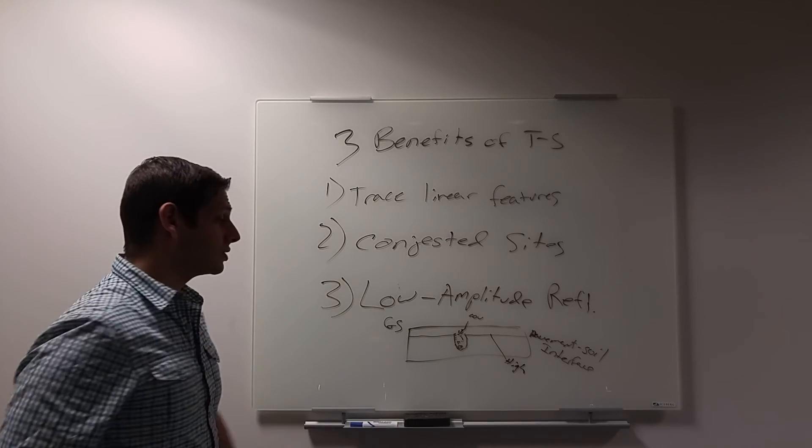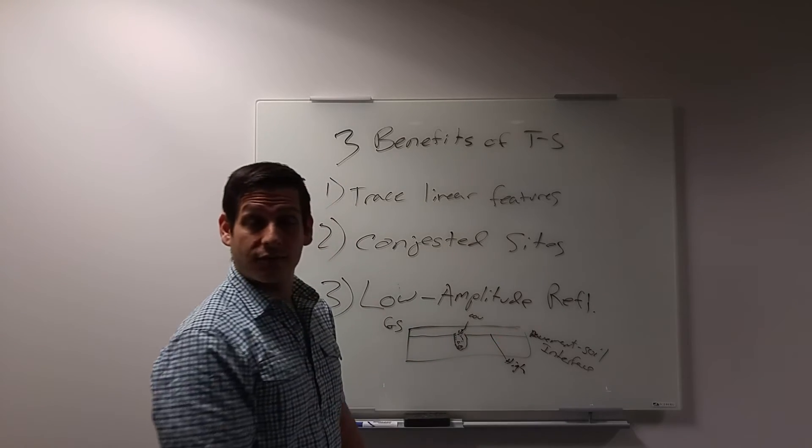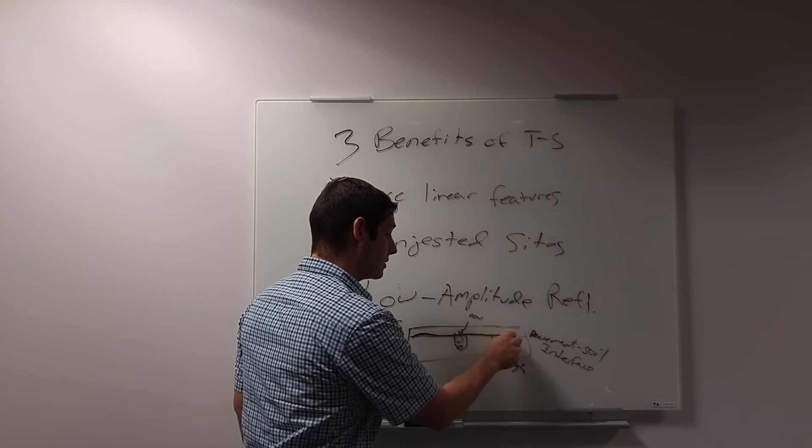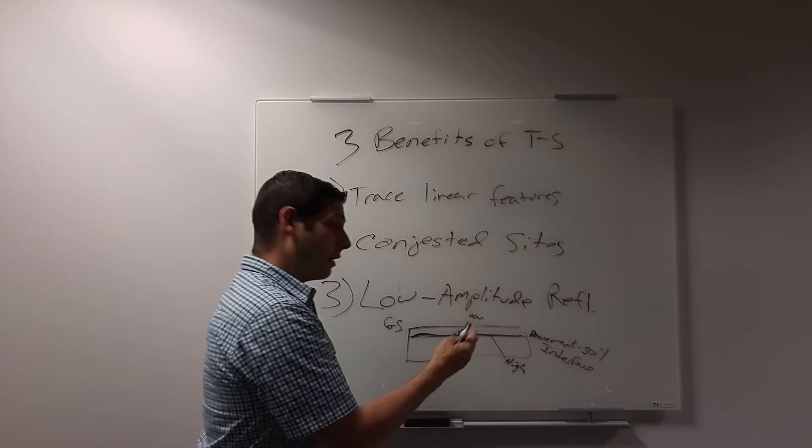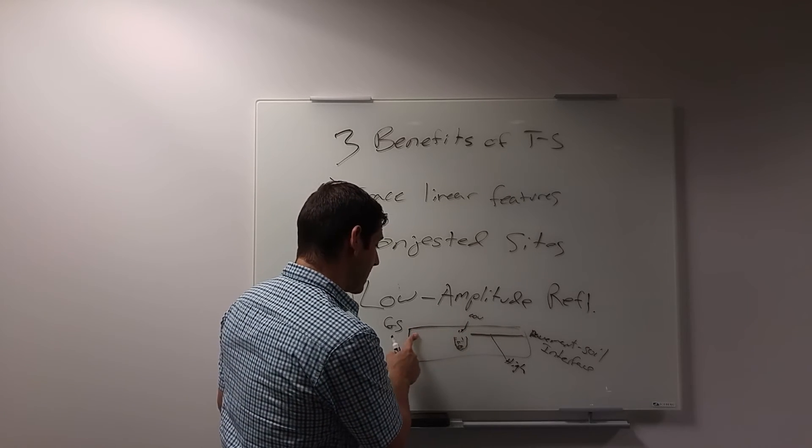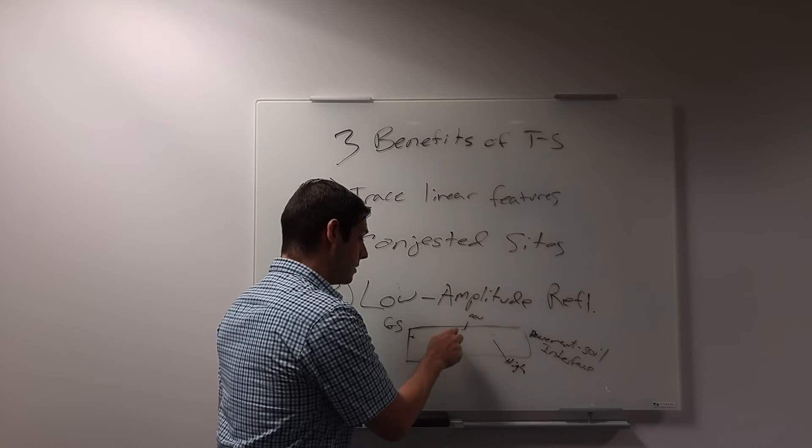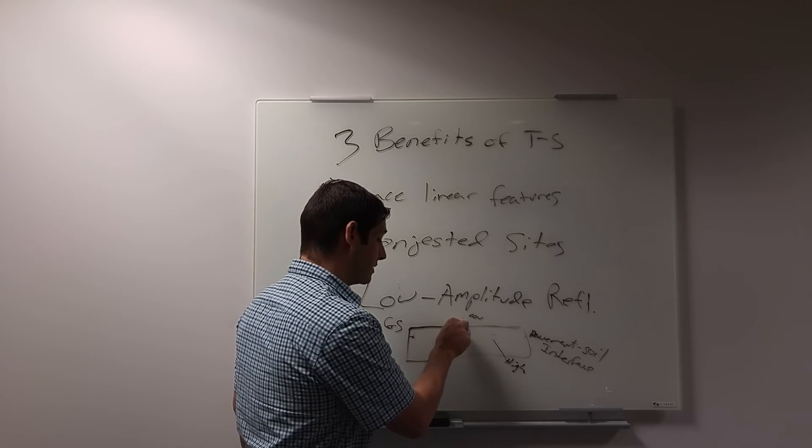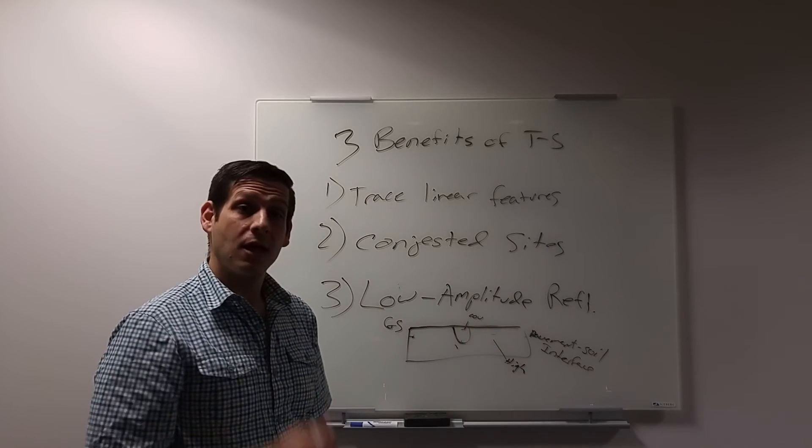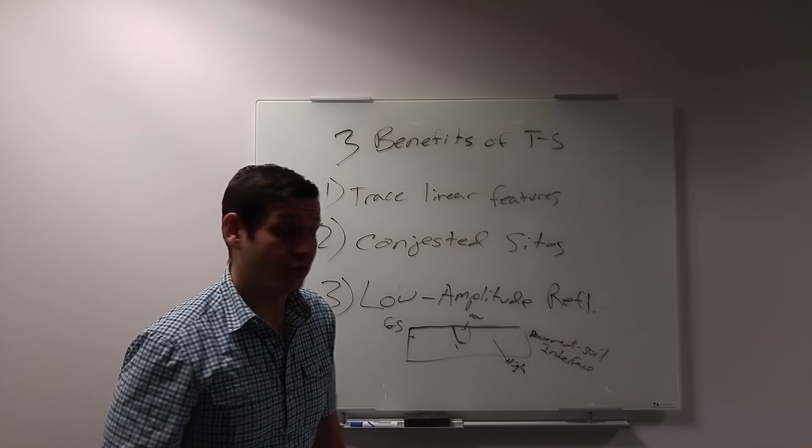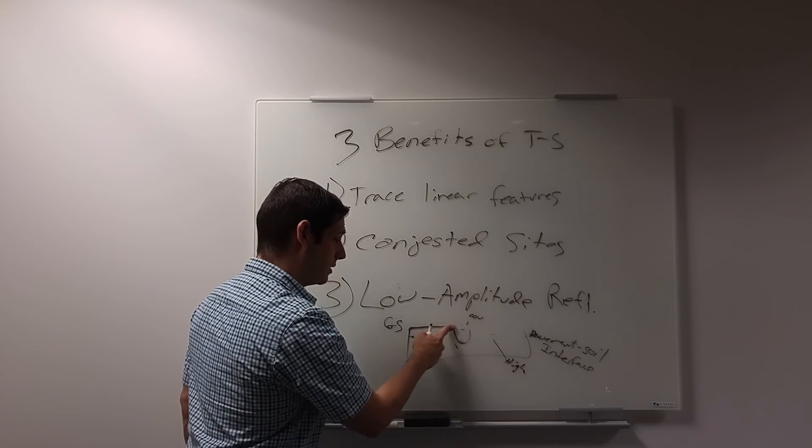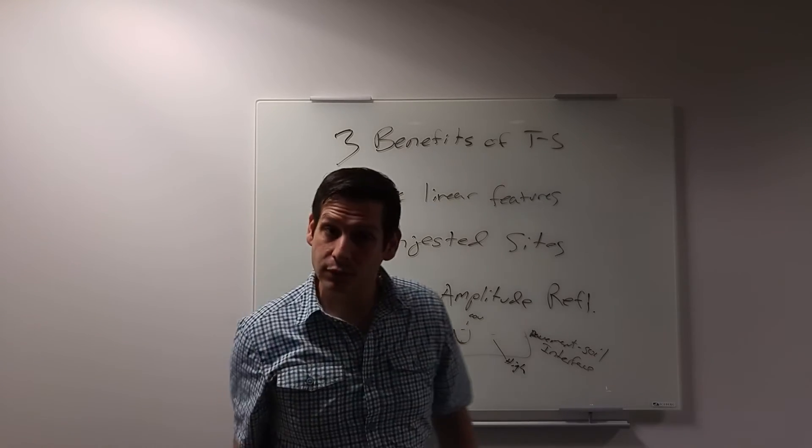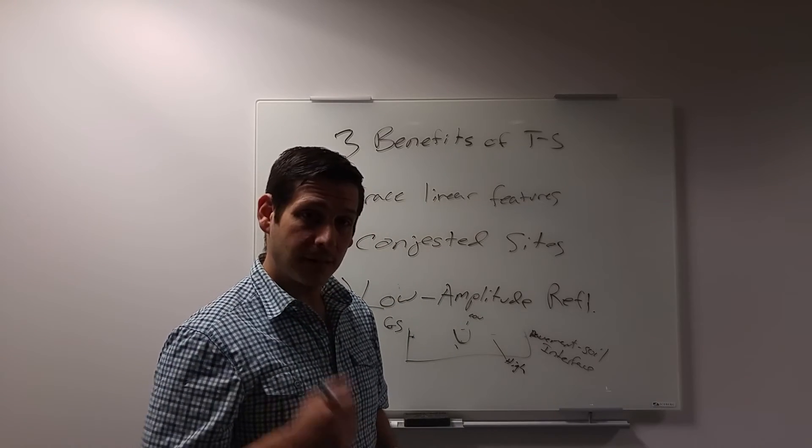So low amplitude reflections can be difficult sometimes to see in profile view with GPR data. Sometimes it's obscured. It could be there's a low amplitude. Let's say the trench is right at the ground surface. Your ground surface reflection could be hard to tell where that trench is. So what might you do? You might do a background filter. What's going to be the result? Goodbye ground surface. Where's your trench? You can't tell. It's impossible to tell.